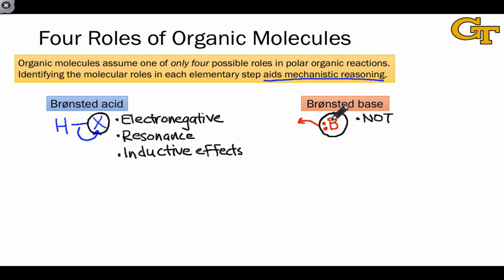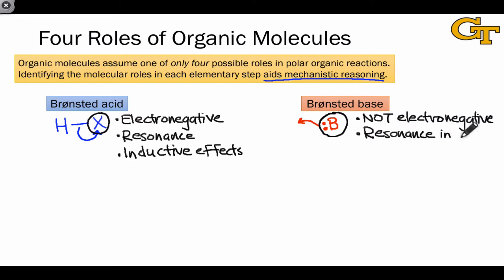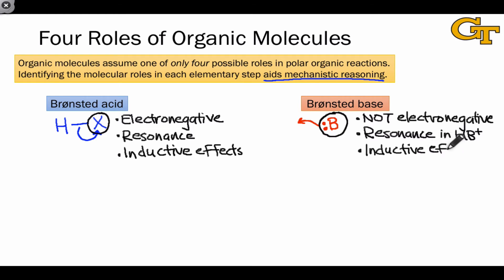We're looking for an element bearing the reactive pair of electrons that's not electronegative, or less electronegative. We're looking for resonance not in the starting base, but in the conjugate acid HB+, which would encourage this process by pulling it to the product side. Inductive effects can also play a role, but in a Bronsted base context, we're looking for groups that donate rather than withdraw electrons.